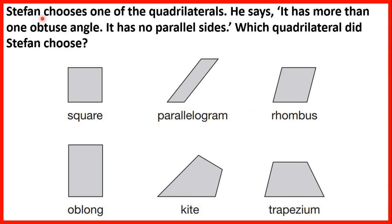Stefan chooses one of the quadrilaterals. He says it has more than 1 obtuse angle and it has no parallel sides. Which quadrilateral did Stefan choose? Well if we look at the kite, we can see that it has 3 obtuse angles — so that's more than 1 — and it has no parallel sides. So Stefan must have chosen the kite. Remember, parallel sides are sides or lines that would go on forever without crossing if they were extended.